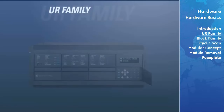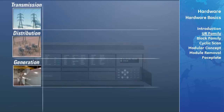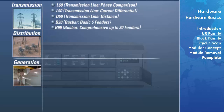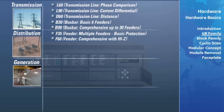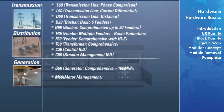The UR family is comprised of relays for transmission, distribution, and generation applications. For transmission applications, the UR family includes the L60 Line Phase Comparison Relay, L90 Line Differential Relay, D60 Line Distance Relay, B30 Bus Differential Relay, and B90 Bus Relay. For distribution applications: F35 Multiple Feeder Management Relay, F60 Feeder Management Relay, T60 Transformer Management Relay, C30 Controller, and C60 Breaker Management Relay. For generation: the G60 Generator Management Relay and M60 Motor Management Relay.